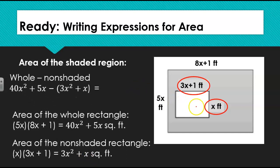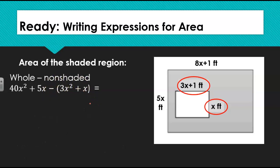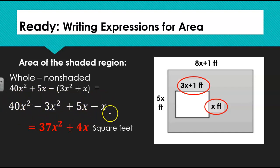Next we will subtract the smaller rectangle from the larger rectangle. We notice that the smaller rectangle is being subtracted, so we are going to have to distribute a negative 1 to each of the terms inside the parentheses: negative 1 times 3x squared and negative 1 times x. We are then left with two terms that are like terms, so we simplify those. When we simplify our like terms with x squared and x to the first power, we are left with the area of the shaded region only, which is 37x squared plus 4x square feet.